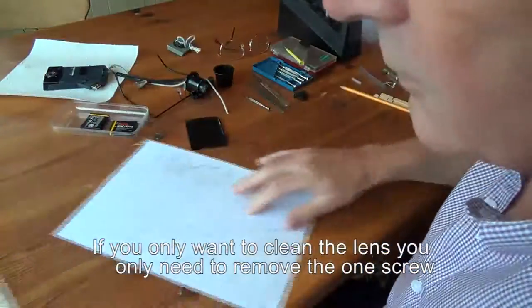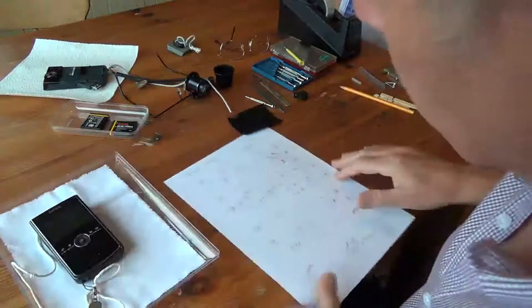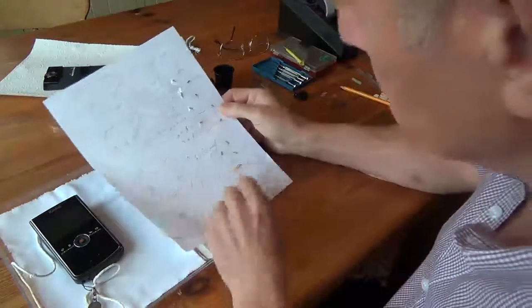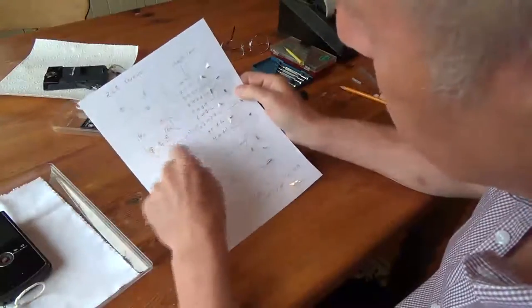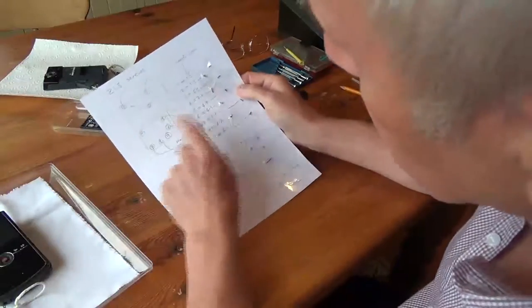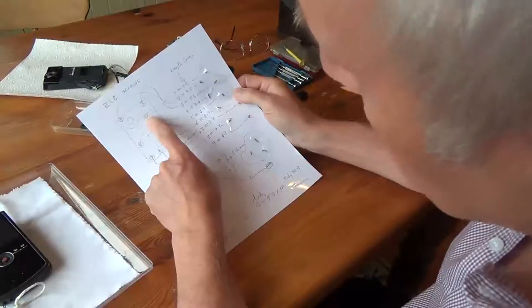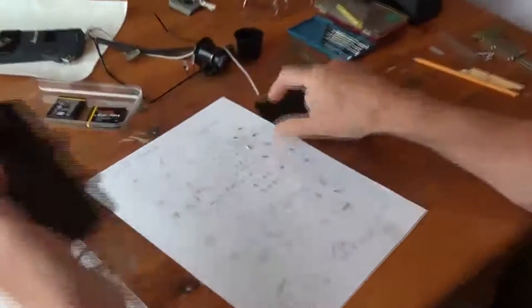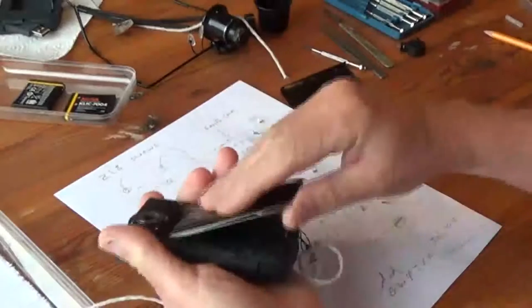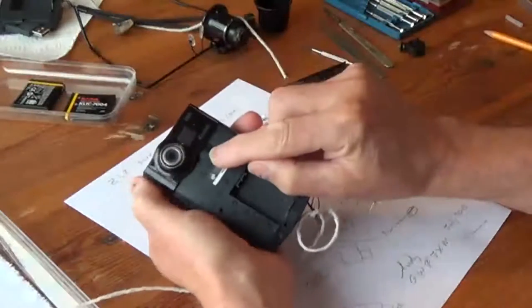I've already disassembled this camera and these are the screws that I've taken out. I'll put a close-up of this on the screen so I've numbered the screws. Number one is the first one to come out for the lens, so that's come from there.